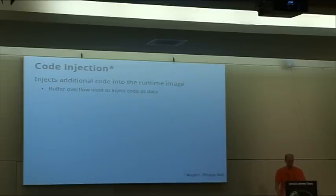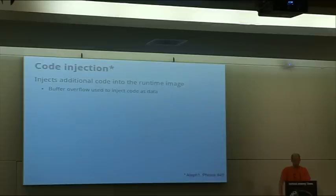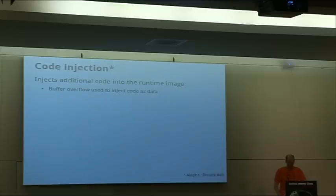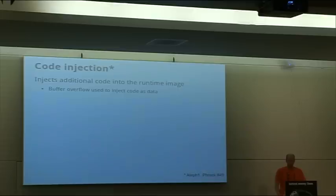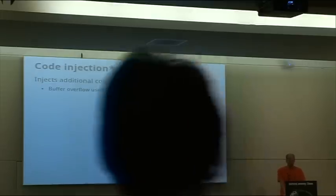The first attack vector we all got very used to and loved was code injection, which is one of the very nice and simple exploits that injects additional code into the runtime image of an application through some attack vector. Maybe we can use a buffer overflow to inject code into the runtime image, but the code is injected as data. The processor will then execute that data as new code and the attacker will have control over the application.